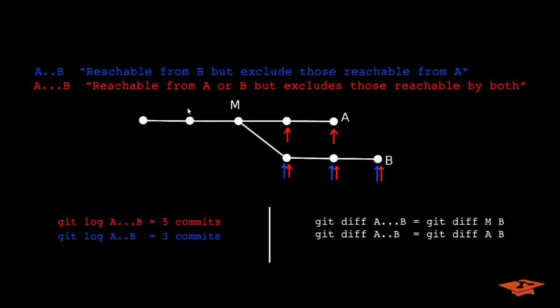When they talk about reachable, they mean is there a path between the commits. So when we say A double dot B, we're talking about commits reachable from B but excluding commits reachable from A.